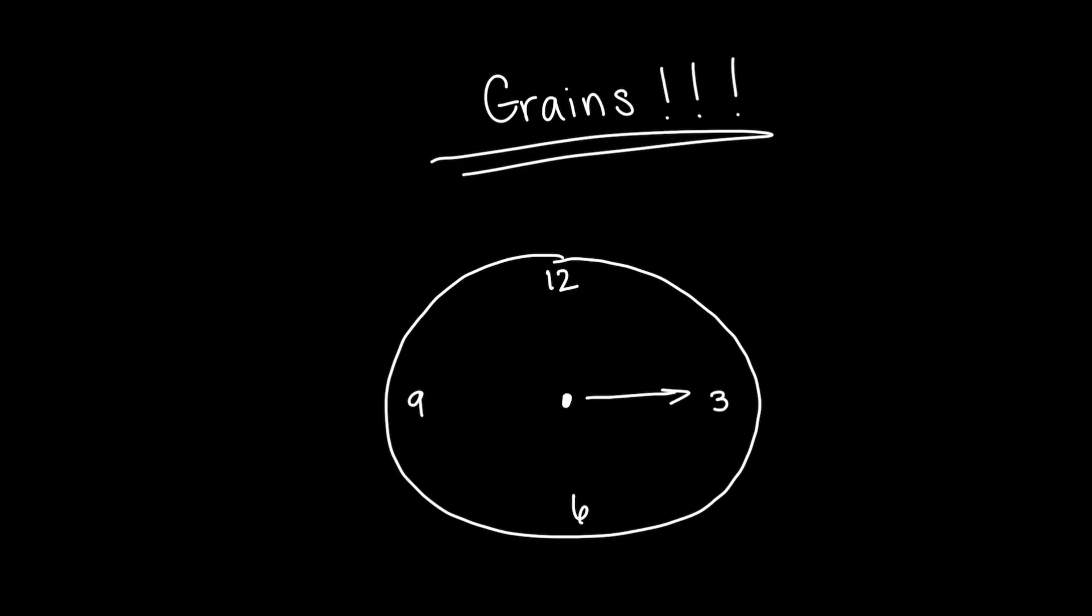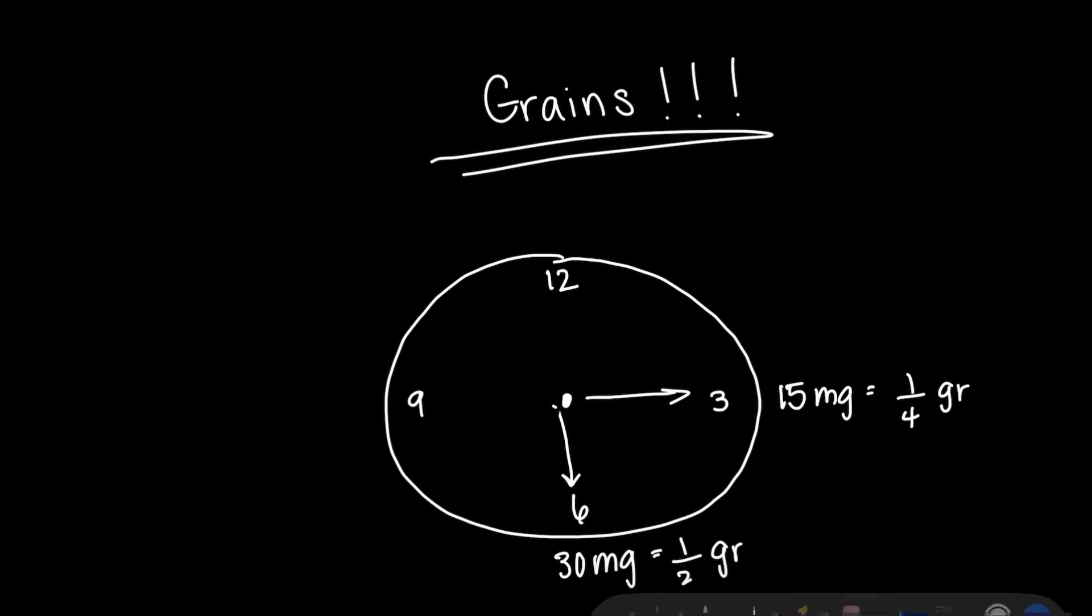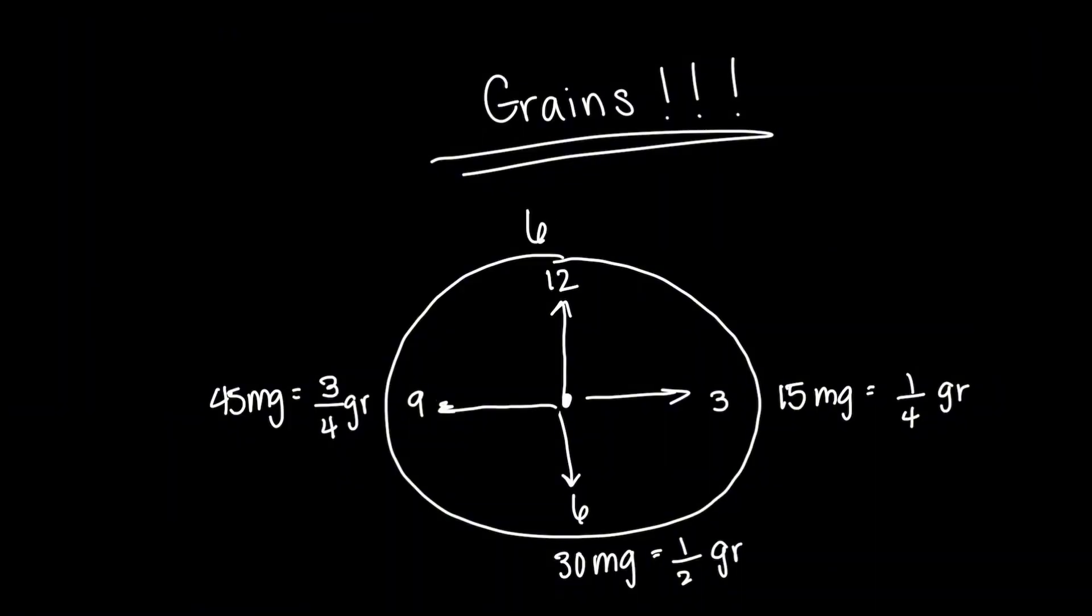And of course, our little middle piece right here. So if we start at the 3, that's a quarter after, right? So 1 fourth grain is going to be 15 milligrams. If we go to the 6, which is half after, that's going to be half a grain is 30 milligrams. Go to 9, that's three quarters after, right? So that's going to be 45 milligrams. And back at the 12, 60 milligrams equals one grain.